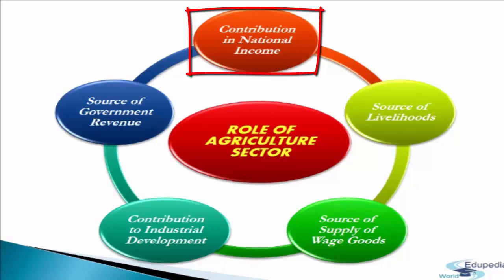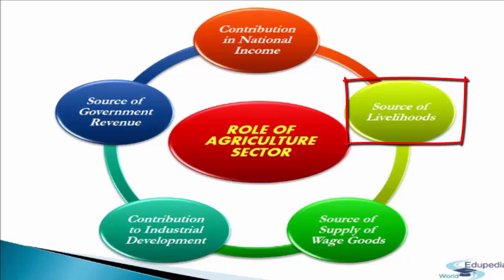In contrast, countries like the UK and USA see agriculture contributing only 3%, and Japan 5%, to national income. We can conclude that these developed countries are less dependent on agriculture compared to the Indian economy. The second consideration is source of livelihood. In India, over two-thirds of the working population are engaged directly in agriculture. In contrast, only 2–3% in the UK and USA, 6% in France, and 7% in Australia depend on agriculture as a source of livelihood.